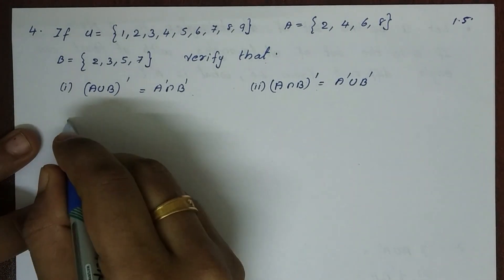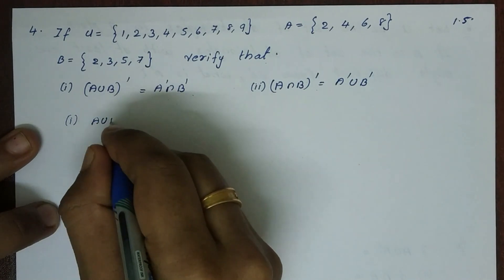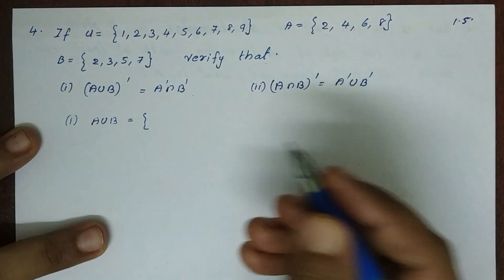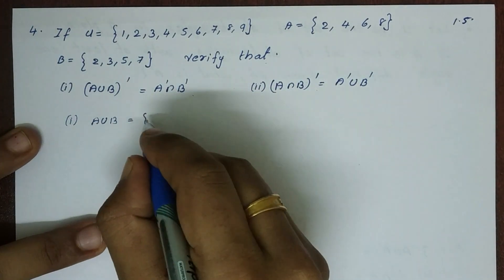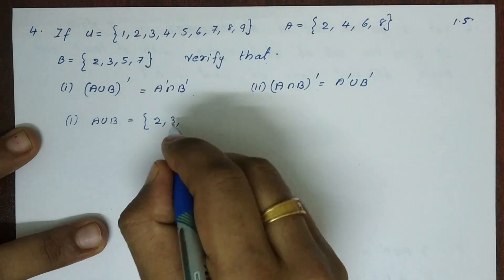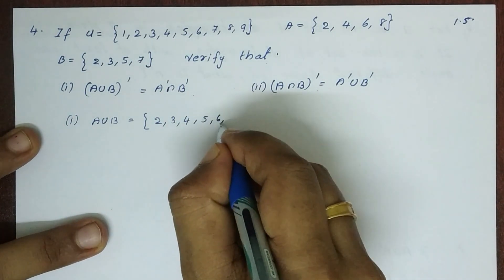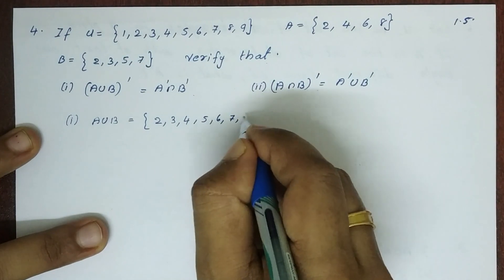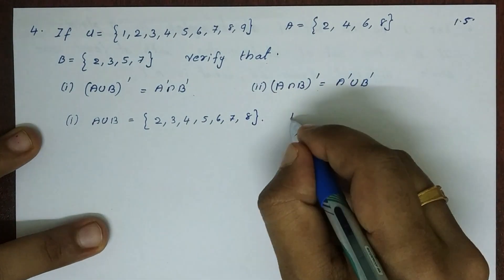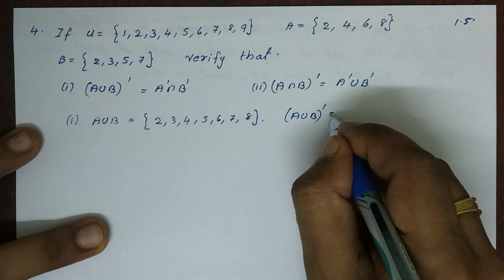The first question is A union B. A union B means all elements in A or B: 2, 3, 4, 5, 6, 7, 8. Then A union B complement.